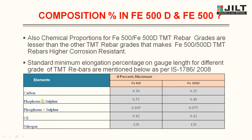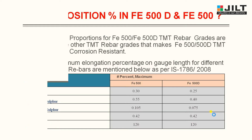These are the chemical compositions present in steel: Carbon, Phosphorus, Sulphur, Phosphorus plus Sulphur, Carbon Equivalent (CE), and Nitrogen. For FE500 the values are: Carbon 0.30%, Sulphur 0.055%, Phosphorus 0.105%, P+S 0.42%, CE 0.120%. For FE500D the values are: Carbon 0.25%, Sulphur 0.040%, Phosphorus 0.075%, P+S 0.42%, CE 0.120%.